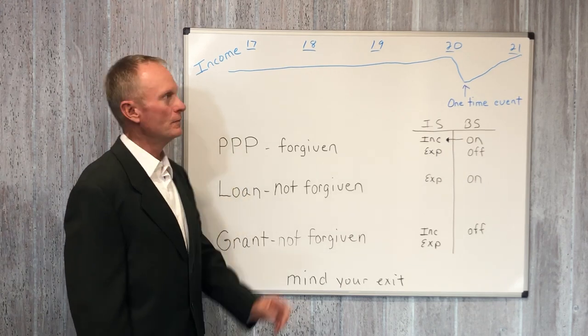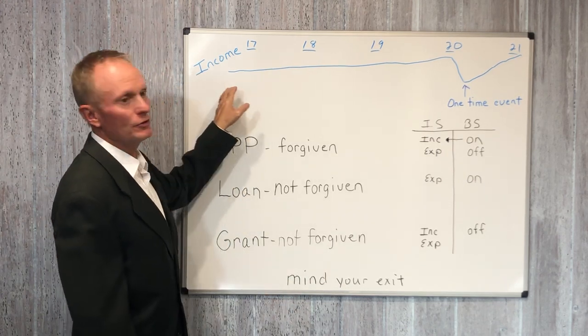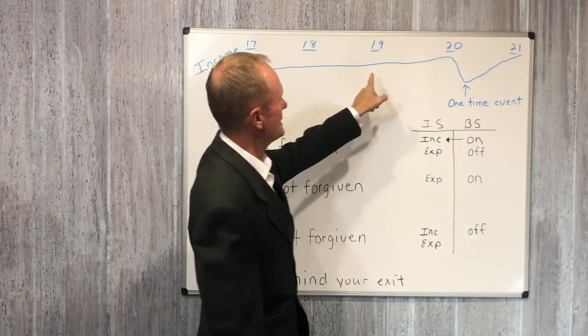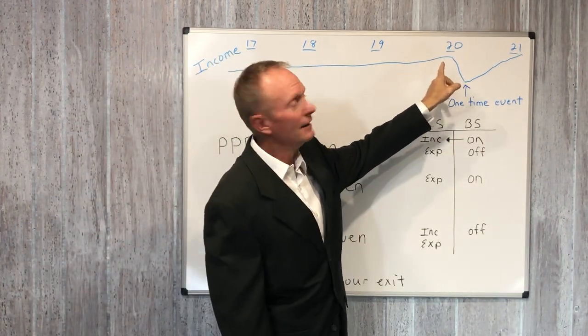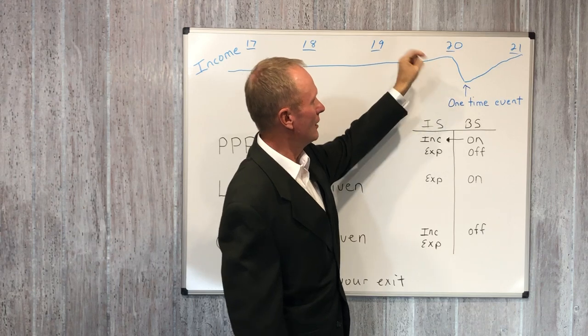For many of you, your business, if we were to graph your revenue, it would be like this. It's coming along 17, 18, 19, and then we hit 20. What's happened with COVID is it's gone down.